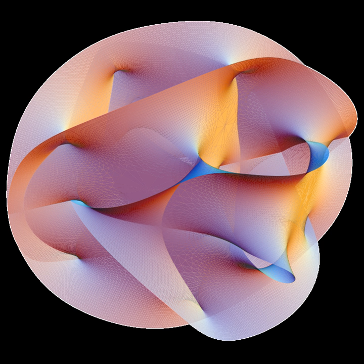The dilaton gravity action is ∫d^d x√−g [1/2κφR − ω(φ)∂μφ∂^μφ/φ − V(φ)]. This is more general than Brans-Dicke in vacuum in that we have a dilaton potential.